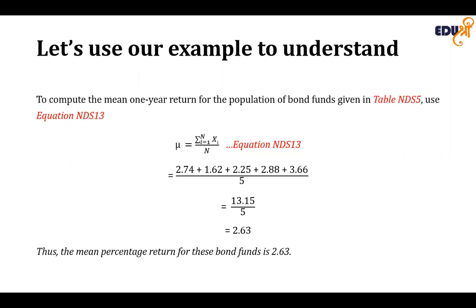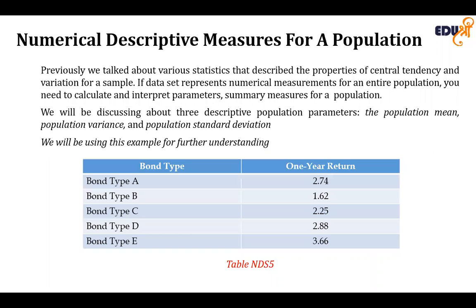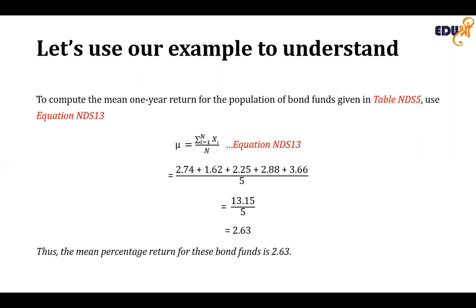For our example with bond types A, B, C, D, and E, to calculate the population mean we add all the values — 2.74, 1.62, 2.88, 3.36 — and divide by the number of bond types, which is five. The resulting value of the mean is 2.63. So the mean percentage return for the bond fund is 2.63.